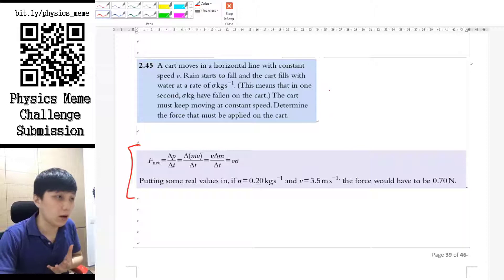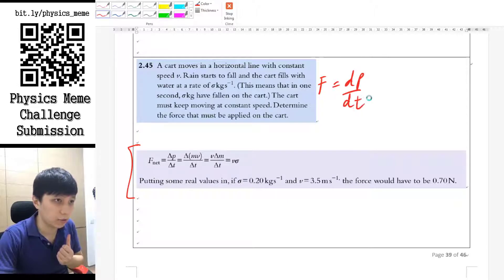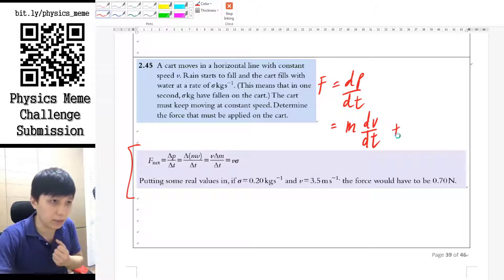If you remember what I said in the part one video, the definition of Newton's second law is dp momentum over dt, and p momentum is m times v. Obviously, then you can derive the equation of m dv over dt, which is ma, simply plus v dm over dt.